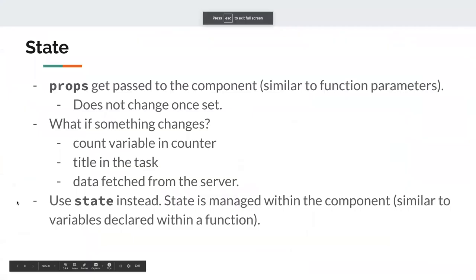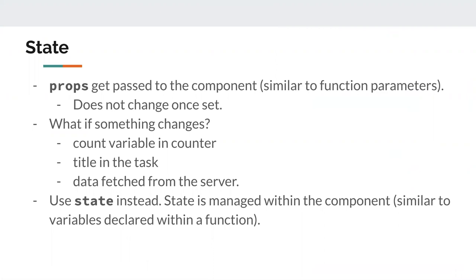So the next thing is state. Let's compare it with props. Props is something passed by the parent component, similar to a function parameter — something static that was passed when the function is called, so there's no point changing it. Prop is something that does not change. What if something changes? There are a lot of things that change in an HTML file — like a counter, new data fetched from the server. For those kinds of dynamic data, we use state instead. State is managed within a component, similar to variables declared within a function.